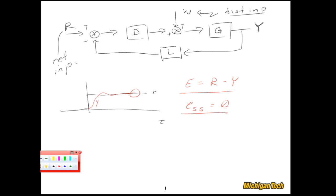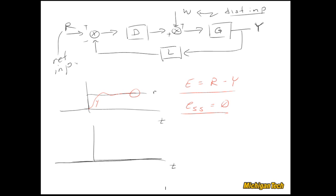Consider a different example where I set R equal to 0 — no input in R — but along comes a disturbance W at some point, maybe a step. What I'd like Y to do is still track R, and R is 0, so I'd like Y to just sit there at 0. Maybe it bounces up a little bit when the step comes in, but then comes back down to 0. E is equal to R minus Y, and in steady state we would like the steady-state error to be 0 regardless of that step disturbance input.